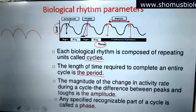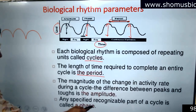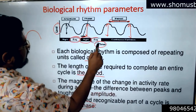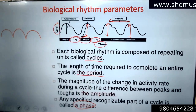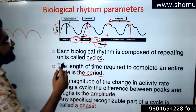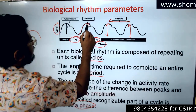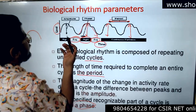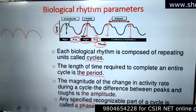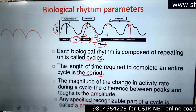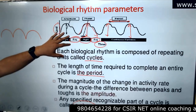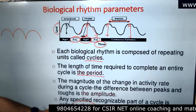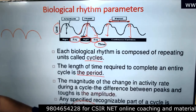Any specified recognizable part of the cycle is known as a phase. In this case, the phase is daytime and nighttime, which is a recognizable part of the cycle. This is a phase where the amplitude increases in the nighttime and falls during the daytime — it may be something related to the sleep hormone melatonin, for example. So this is known as a phase, which is the recognizable part of the cycle.